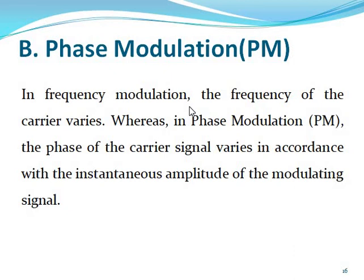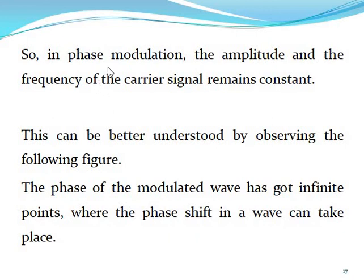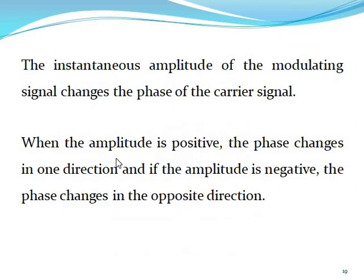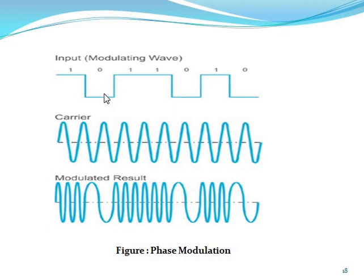Then, in phase modulation, the amplitude and the frequency of the carrier signal remain constant. We can show the frequency and carrier signal is constant; at that time phase modulation is shown. This is the positive, this is the negative. At that time, if the modulation is increasing, we can show the positive wave for the amplitude; and if the modulation wave is decreasing, the phase value is decreasing. If the amplitude is positive, the phase changes in one direction — the upper direction. If the phase value is decreasing, it changes in the opposite direction — meaning down. This is the phase modulation.